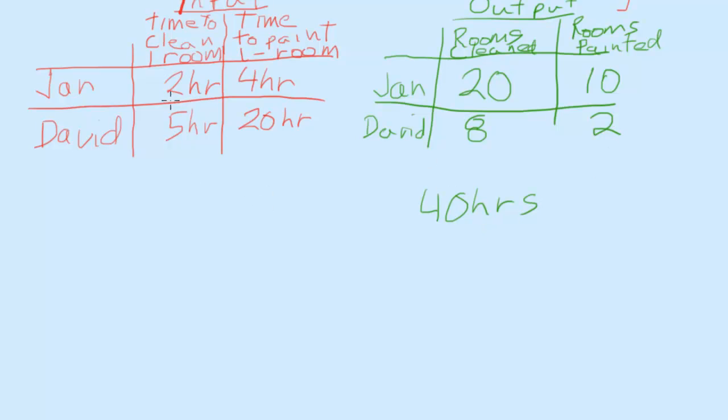Now notice what we have here is if Jan takes these 2 hours to clean a room, that's time that she's not available to paint. Likewise, if he's cleaning, he's not painting. There's a trade-off. So let's calculate our opportunity cost.